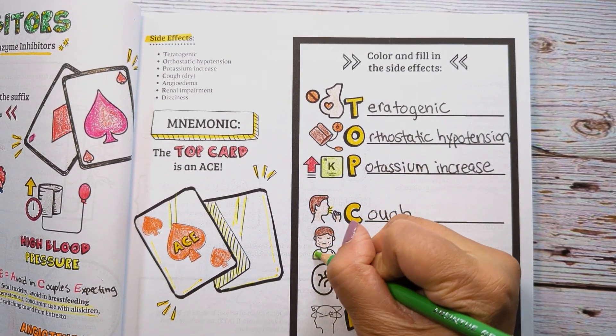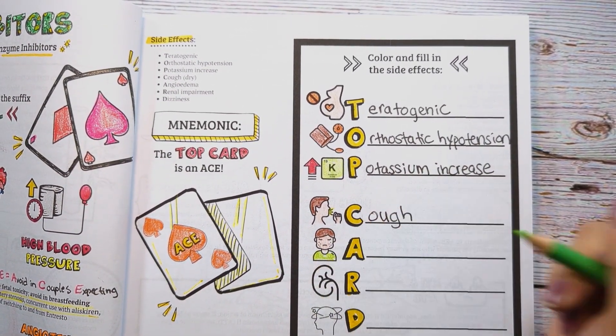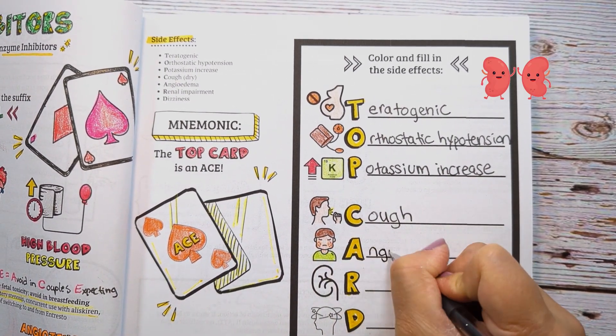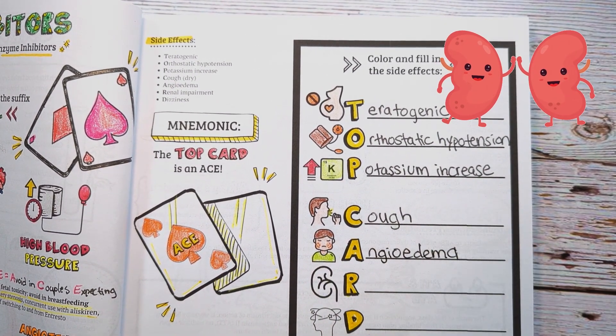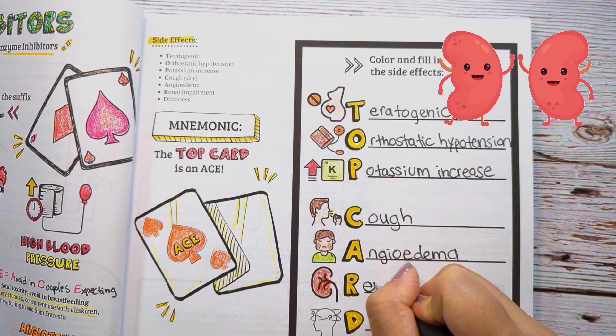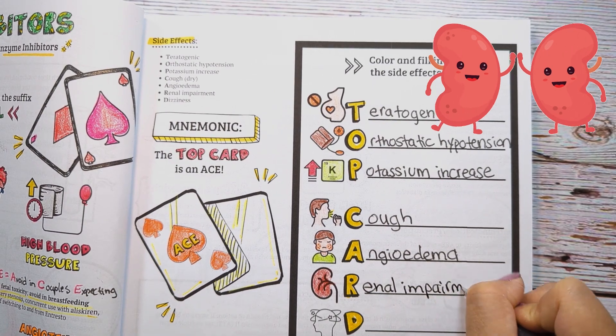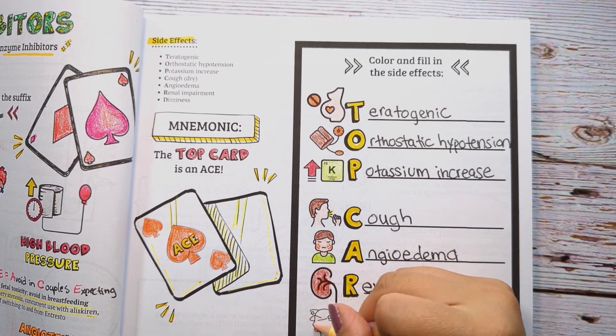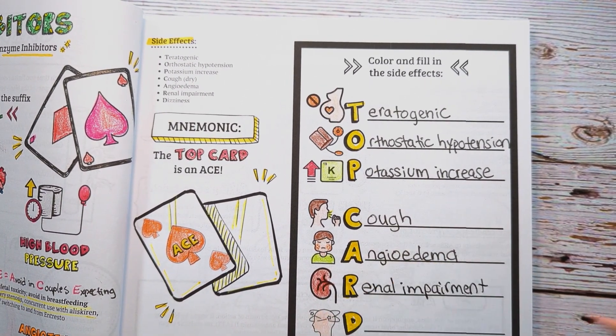A is for angioedema. R is for renal impairment — it's important to monitor renal function when initiating ACE inhibitors. And D is for dizziness.